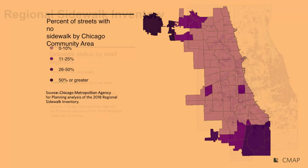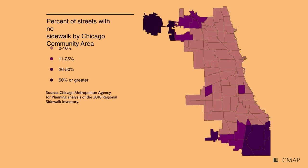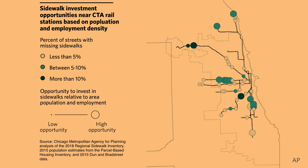You can do summaries on any geography you want. For example, here I have the percent of streets with no sidewalk based on Chicago community area — you can look at disparities across the city or region. For transit folks, you can look at sidewalk access by transit stop. I made a map that actually uses two unique CMAP datasets: our sidewalk inventory and our parcel-based housing inventory, which estimates the number of people living in each parcel in the seven-county region. It shows CTA rail stations and compares sidewalk coverage within a half mile to population and employment density.